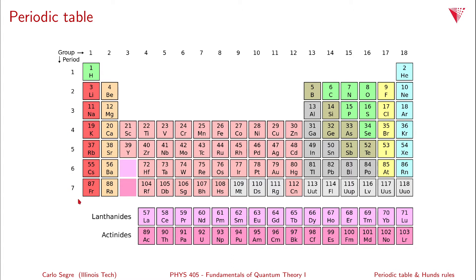This basically gives you the construction of the periodic table. You fill the 1s and s states on the left, the d states in the middle, the f states at the bottom, and the p states on the right. By counting and looking at the periodic table, you can tell what kind of configuration and how many electrons are in each state.